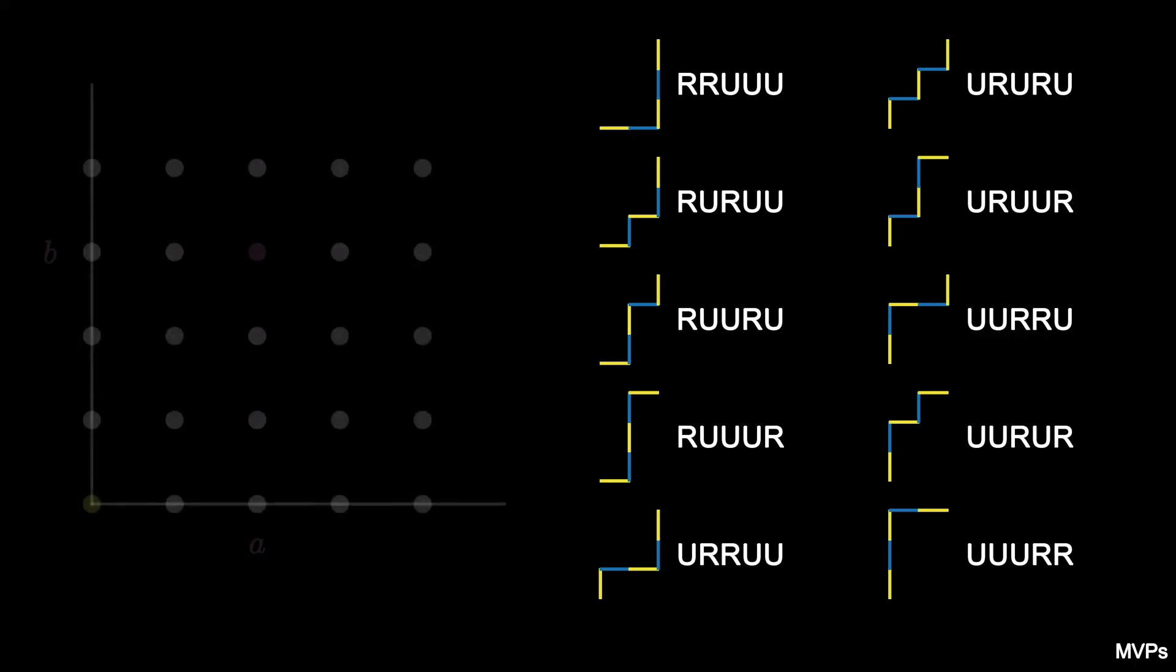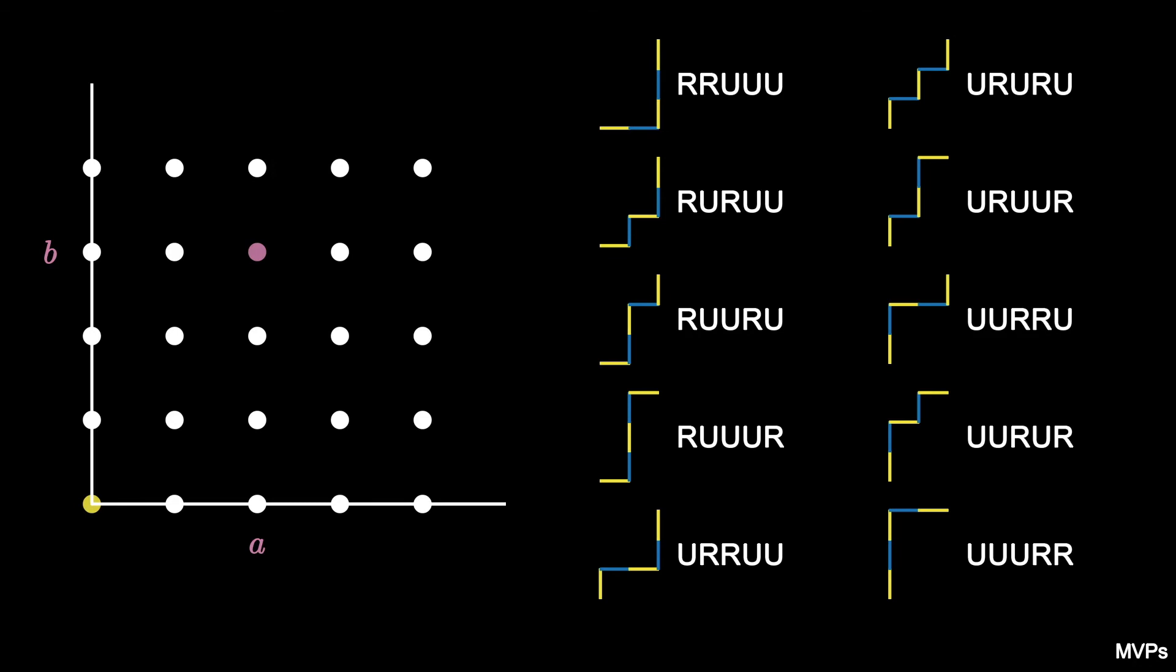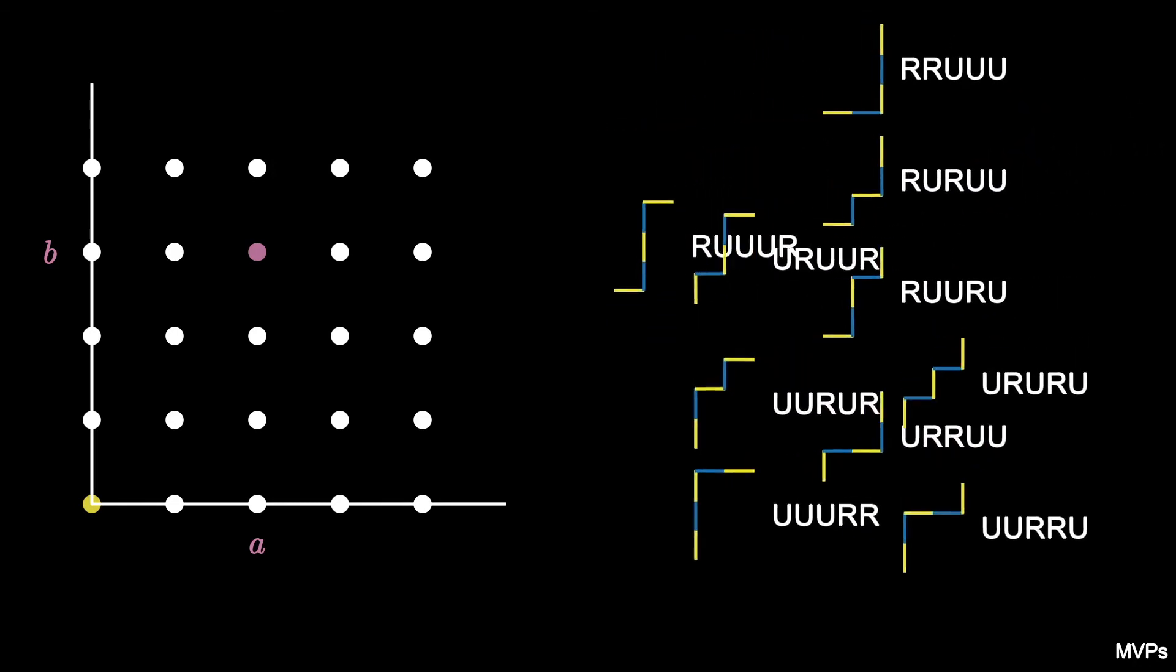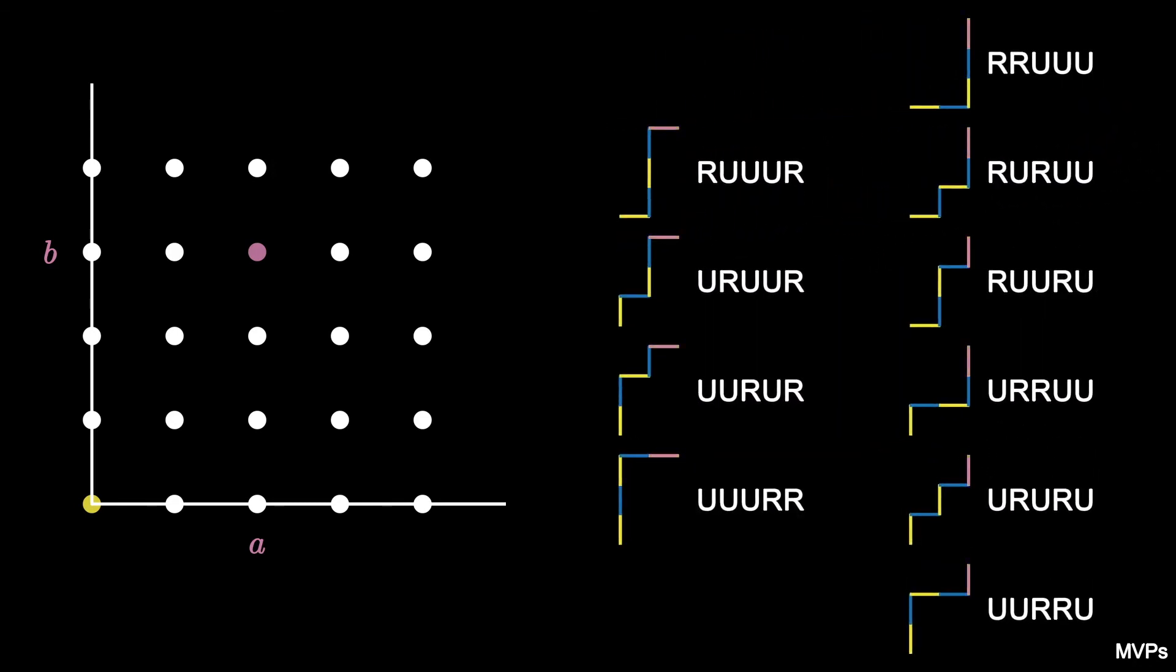Returning to our lattice paths, we see that we can group them by their final step. So in our example, 4 end with a right step and 6 end with an up step.